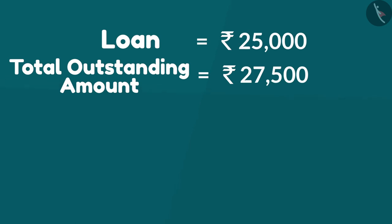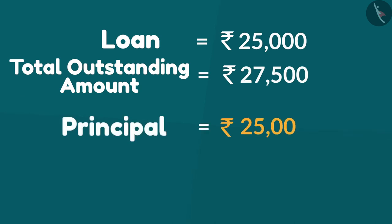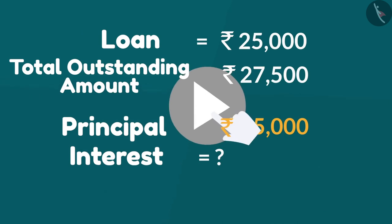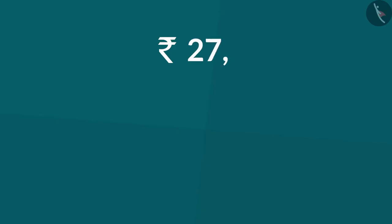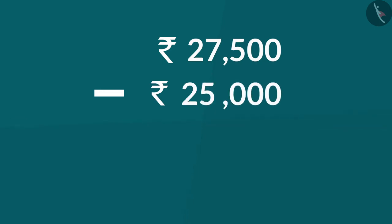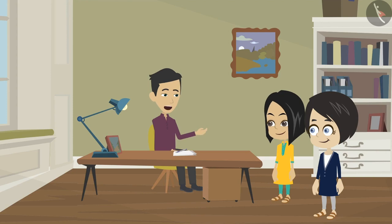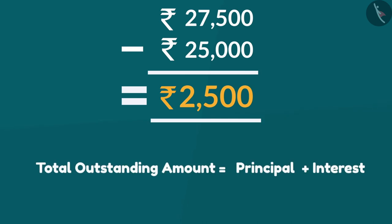Out of 27,500, the principal is 25,000, which is taken as loan. Then what is the interest? You can pause the video here if you want and think about it. 27,500 minus 25,000 is equal to 2,500. That means the interest is only rupees 2,500, because total outstanding amount is principal plus interest.